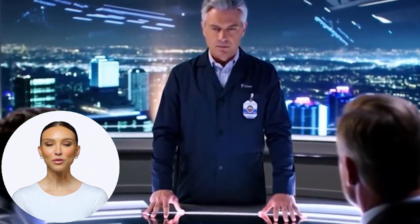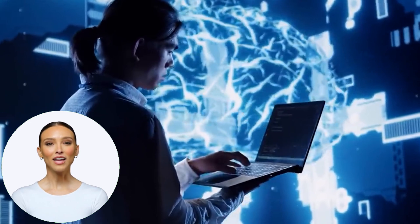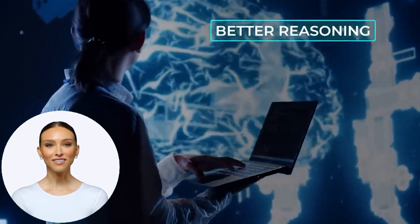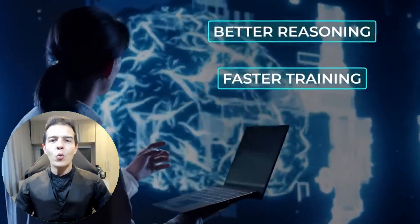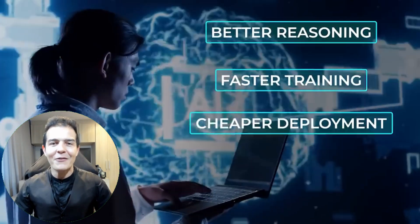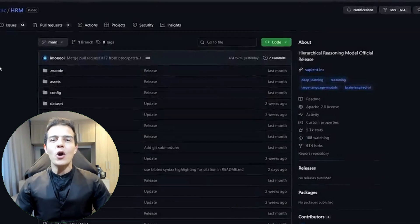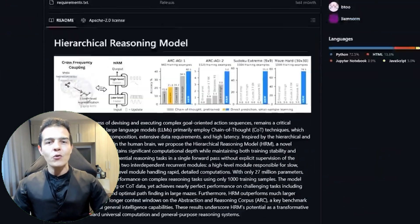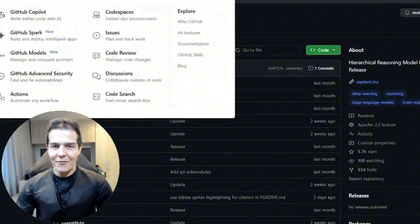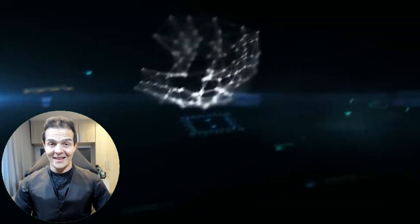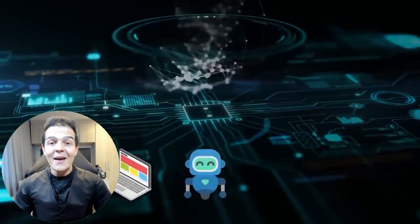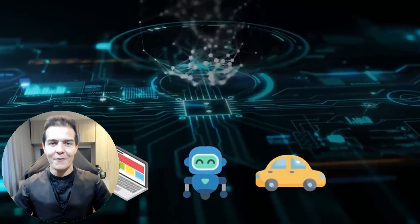If the HRM's path continues, we could have AI agents that don't live in data centers, but in our laptops, robots, or cars. And they won't just be parroting the internet. They'll actually be thinking. So what do you think? Do you believe this is the future of artificial general intelligence? Leave your comments. We'll read all of them. And don't forget to subscribe and like if you want to see more breakthroughs like this. Thanks for watching, and we'll see you in the next one.